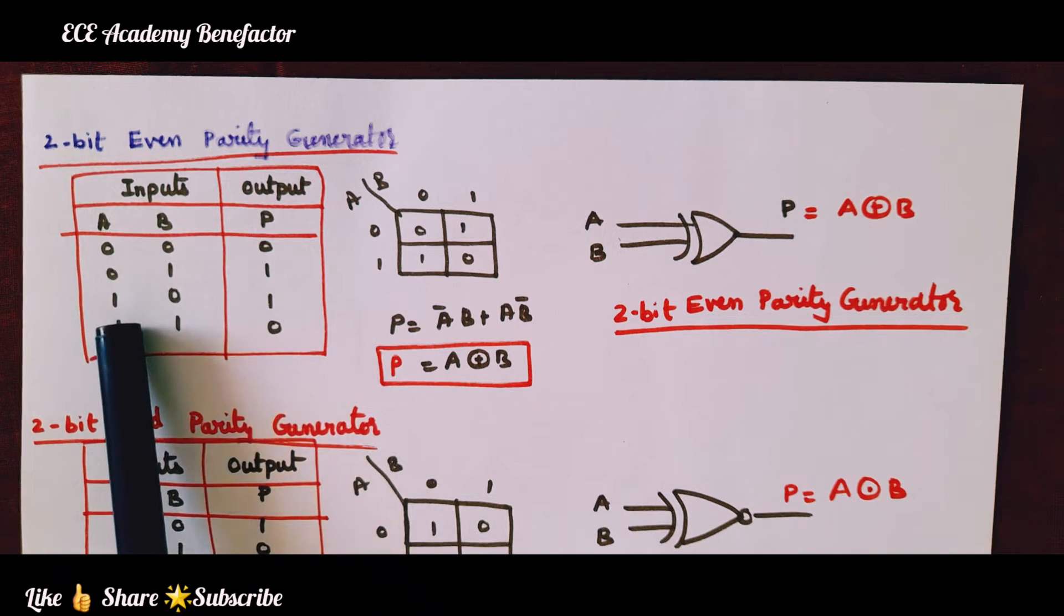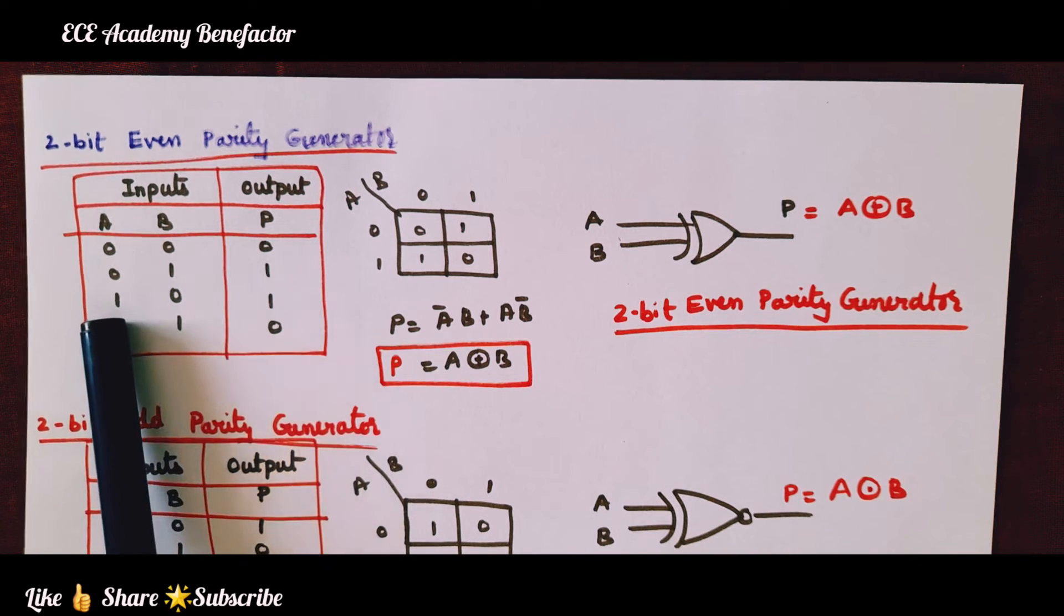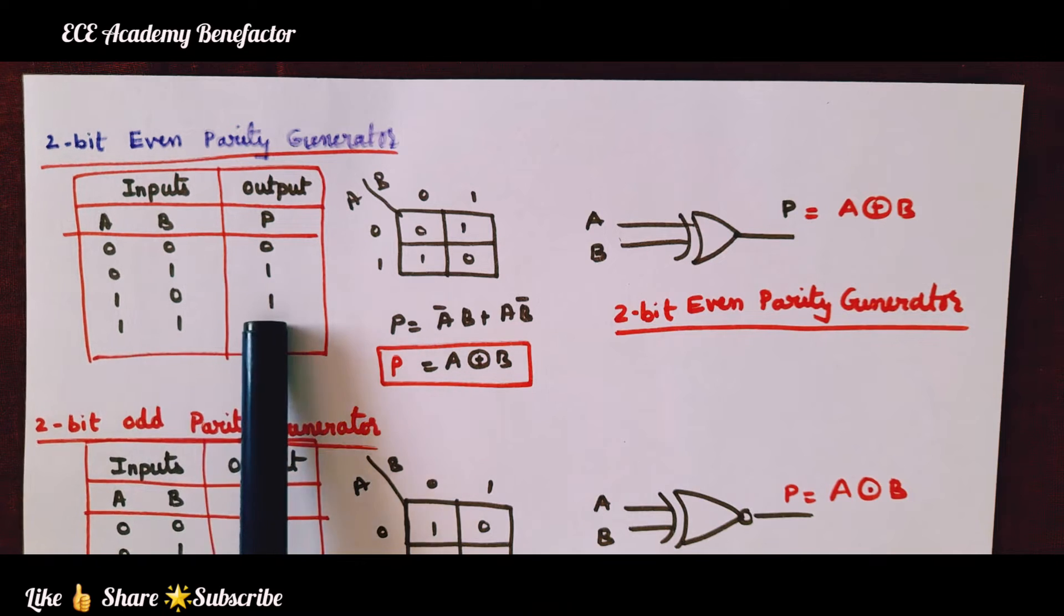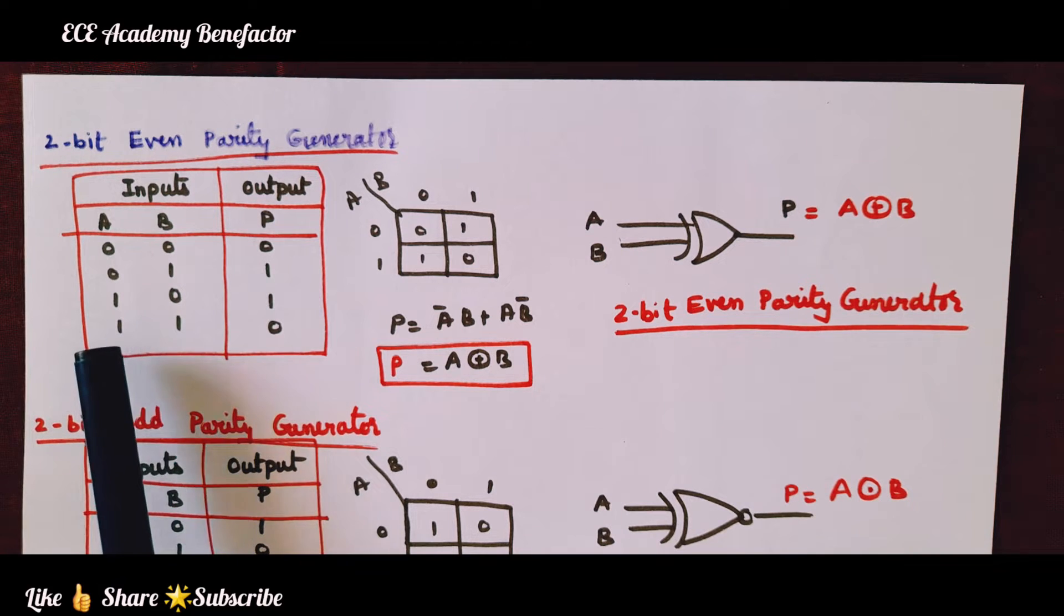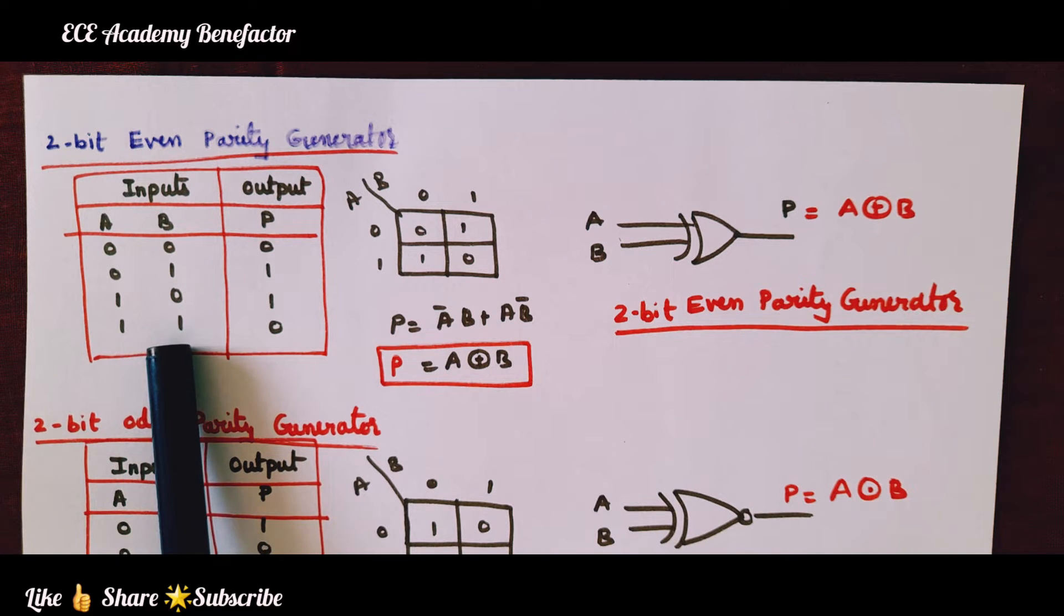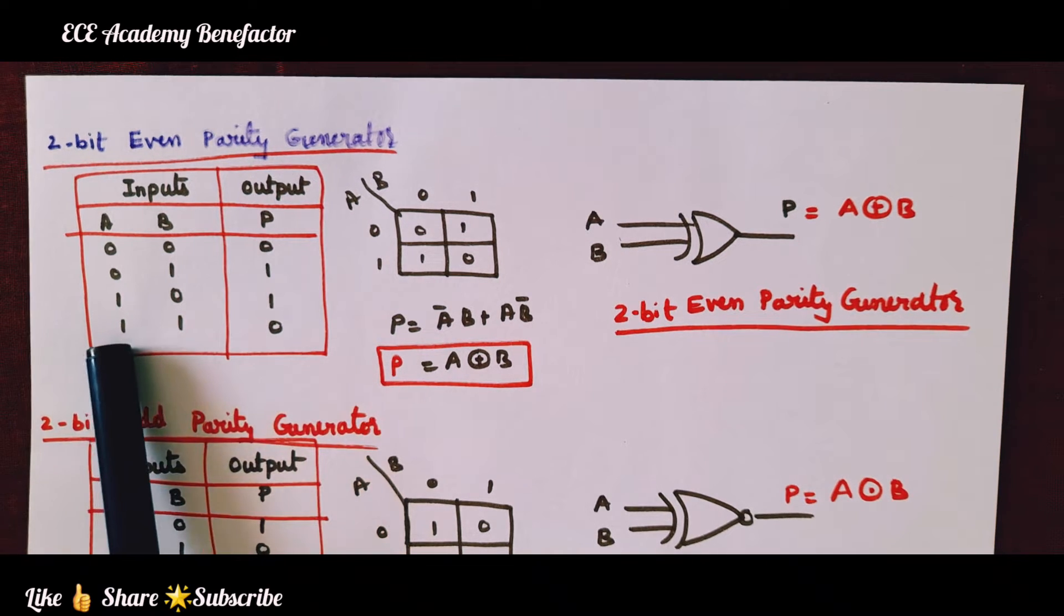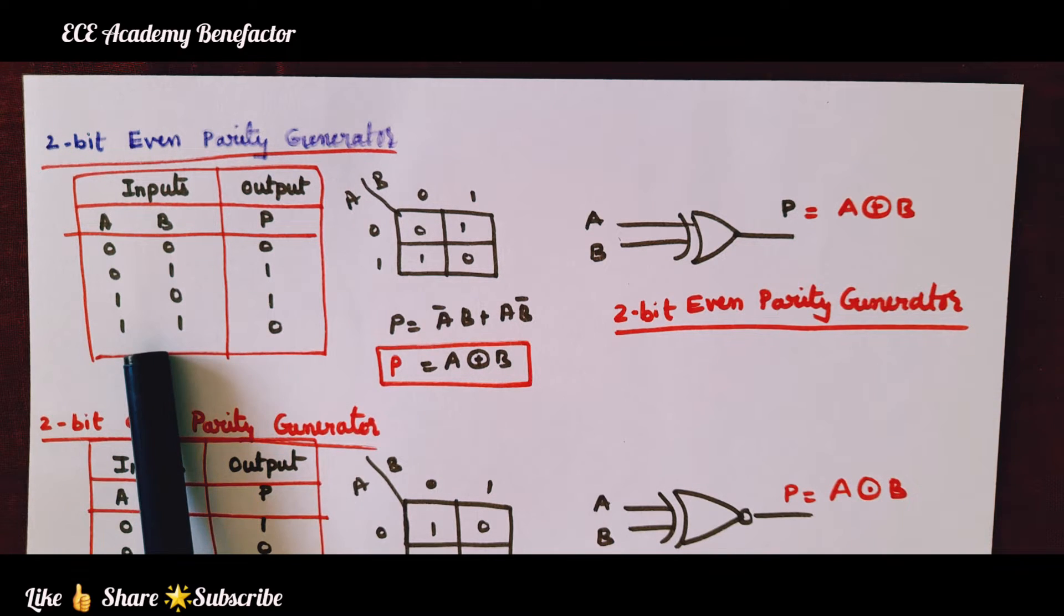So that the information transmitted will be now 0, double 1 which is containing even number of 1s. Next, check the next condition, the information is 1,0. It is containing odd number of 1s. We are designing even parity generator, so the parity bit will be 1. Next input information is 1,1. It is having even number of 1s, so the parity will be 0. When this information is transmitted it should have even number of 1s.